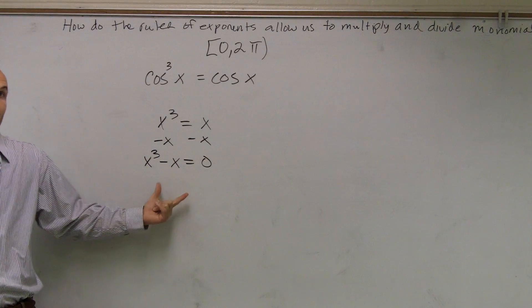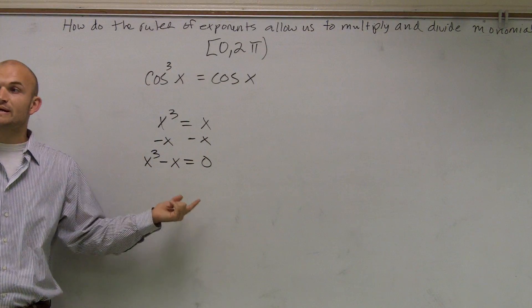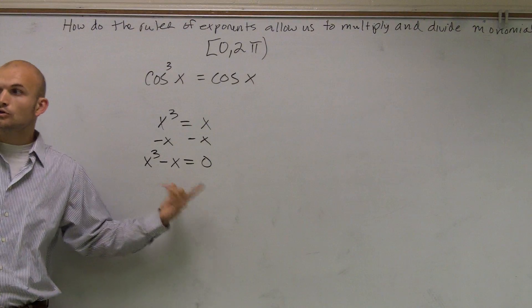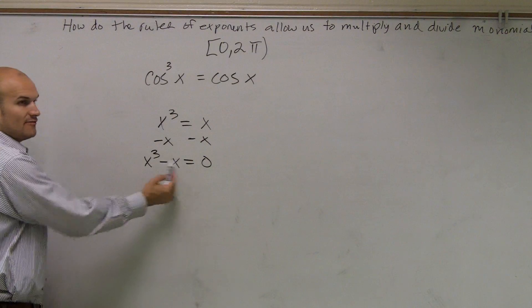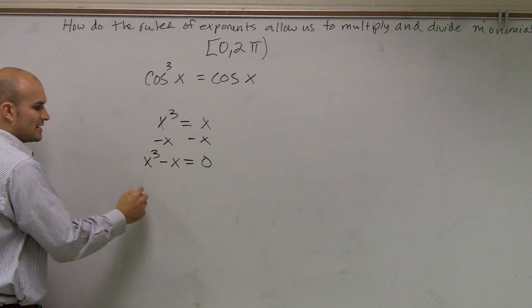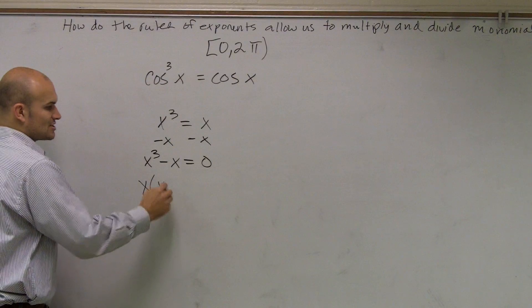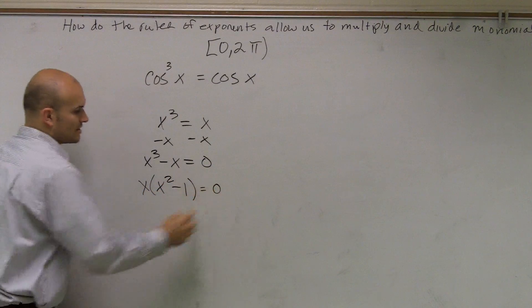When you're solving for x, when you're solving for any value, you've got to make sure they're on the same side. Then, if you can't solve them by using algebraic terms, the next thing you can do is look to factoring. If I can factor out, what can I factor out here? I can factor out an x, and that would give me x² minus 1 equals 0.